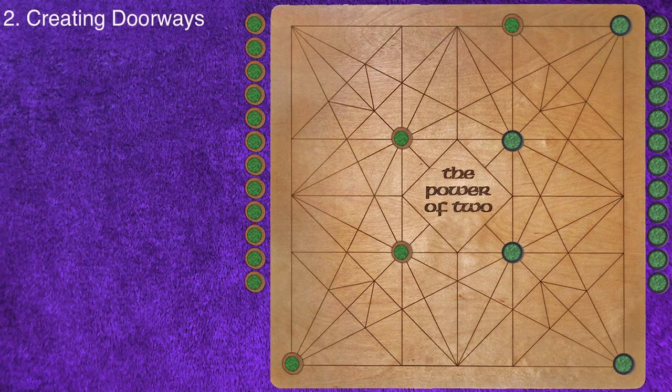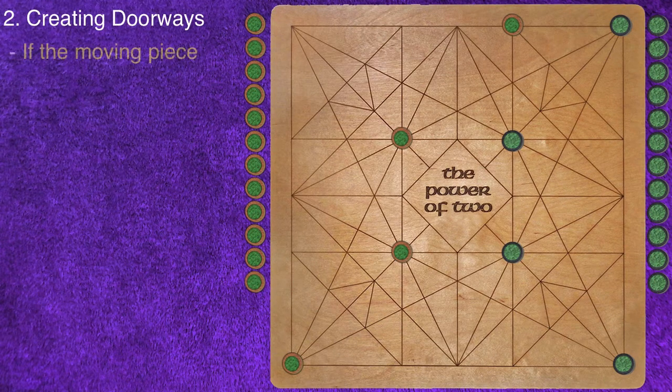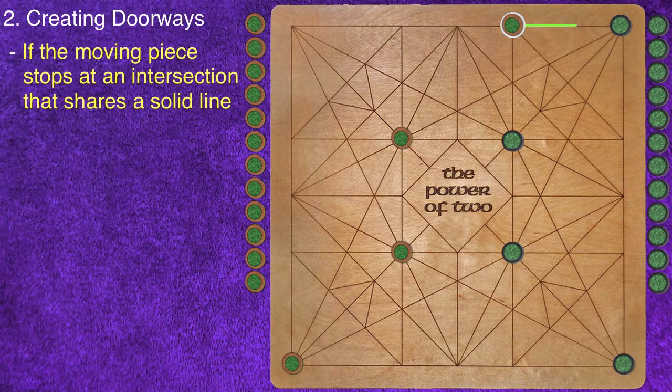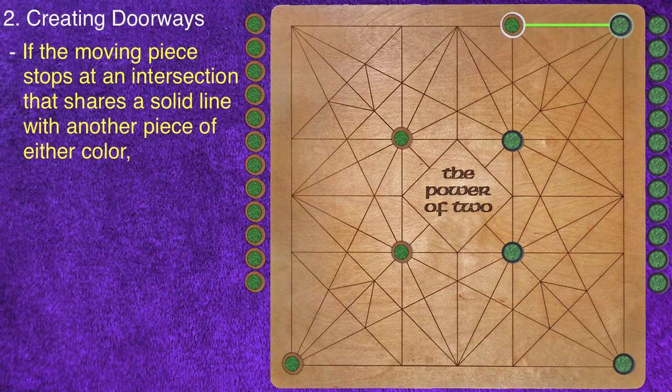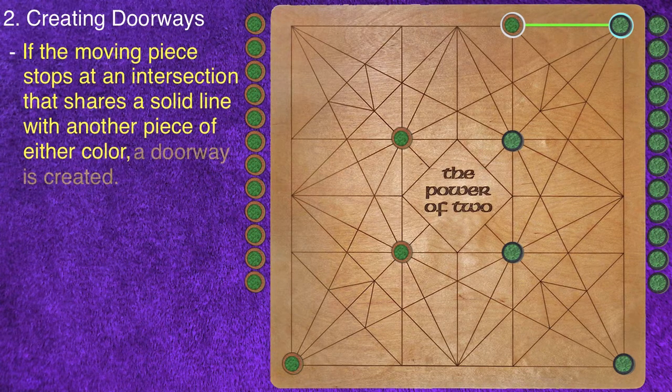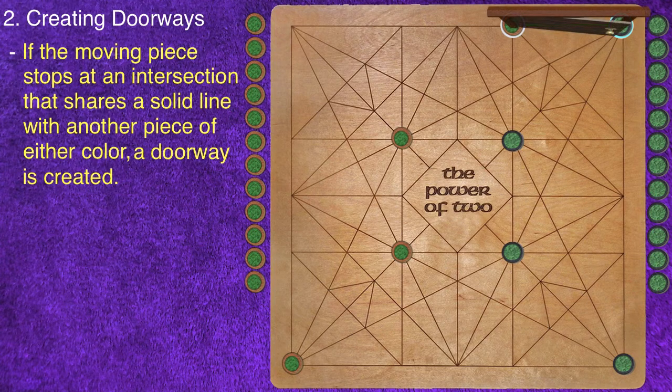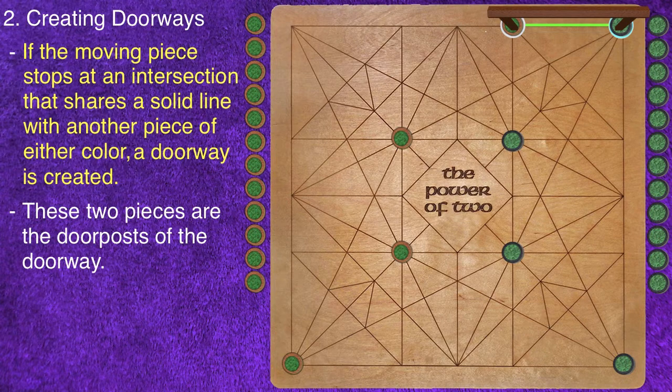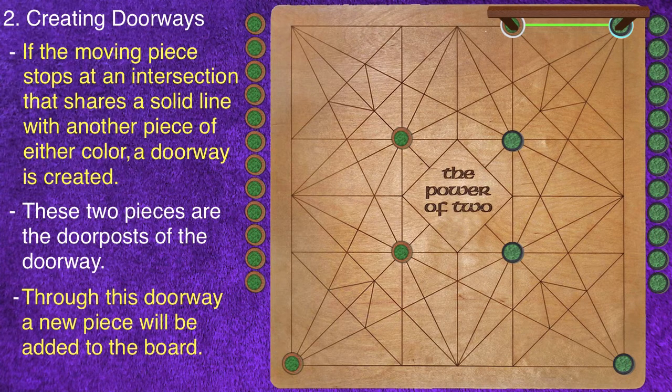Step 2: Creating doorways. If the moving piece stops at an intersection that shares a solid line with another piece of either color, a doorway is created. The two pieces on either side of the doorway are the doorposts. It is through this doorway that a new piece will be added to the board.